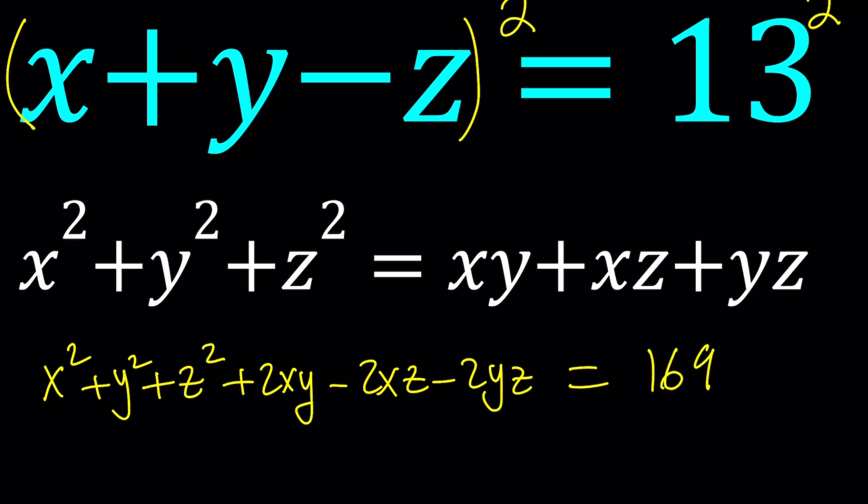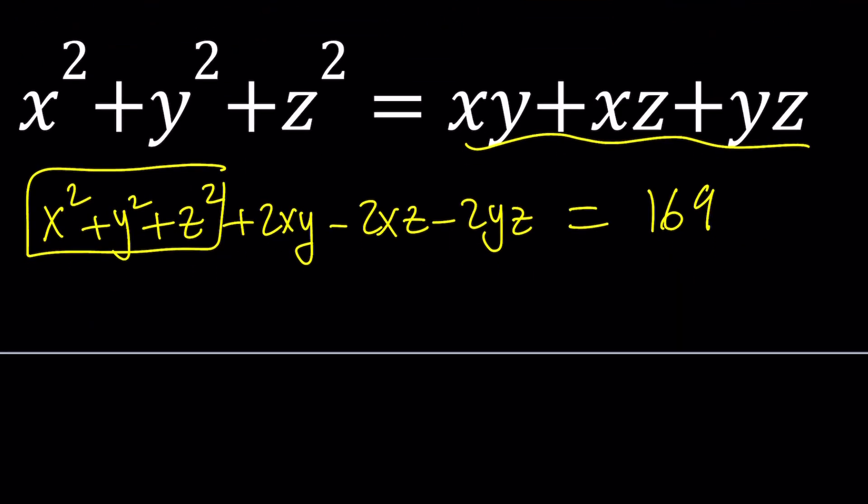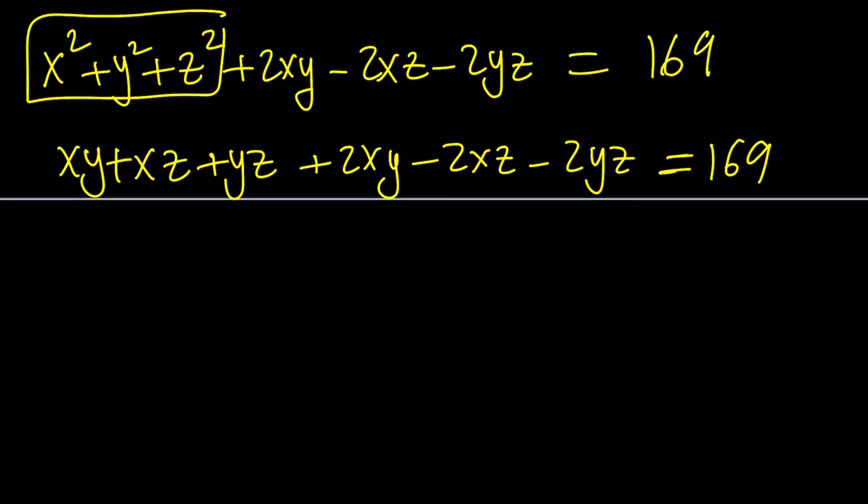So, I do know x squared plus y squared plus z squared. I do know that at least it's equal to this, so I can go ahead and replace this with xy plus xz plus yz. And then, add the 2xy, and then minus 2xz, and then minus 2yz, and that equals 169.